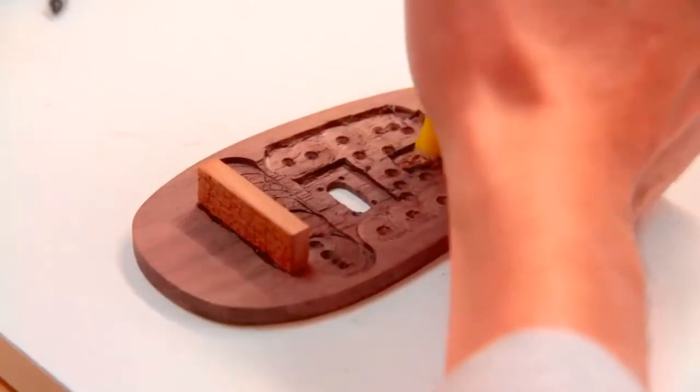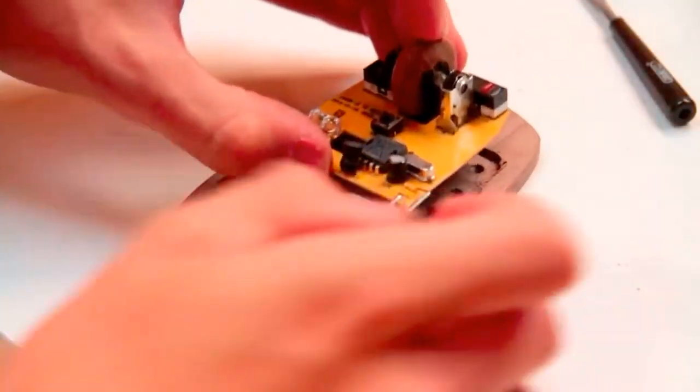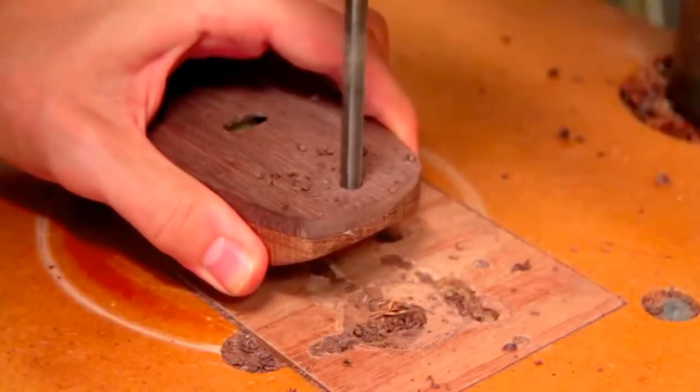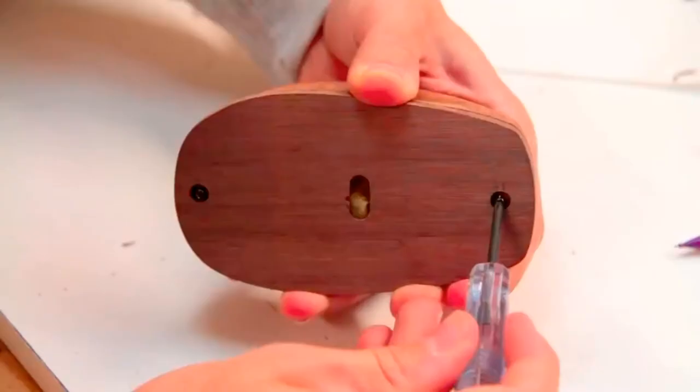With the scroll wheel finished, I'm ready to go ahead and glue in the support. And now I'm drilling a couple of holes for the screws to hold on the base.